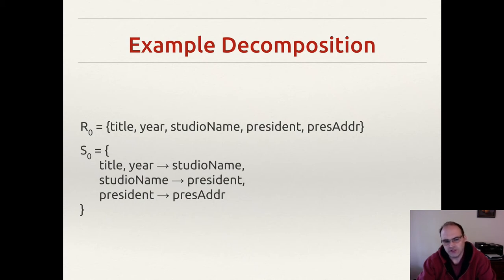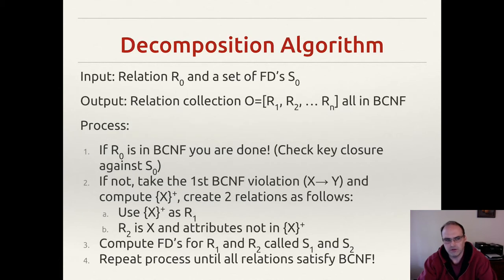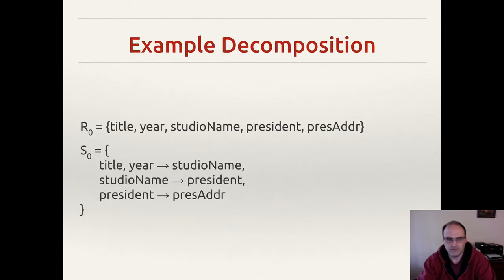So R0 initially is: title, year, studio name, president, and president address. The set of functional dependencies — there are three of them: title, year → studio name; president being dependent on studio name; and president address being dependent on president. Those are our three functional dependencies and our relation R0. This is our input data, and we've satisfied what we declared as our input: R0 and S0.